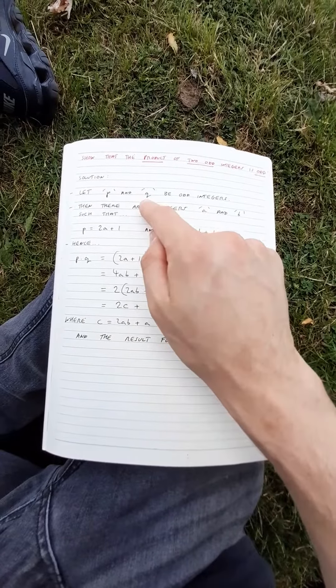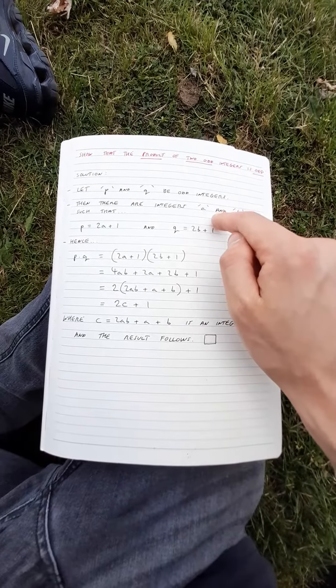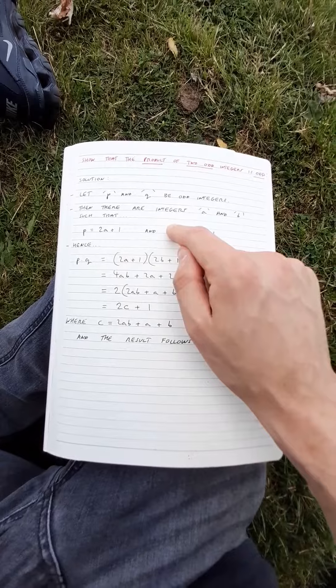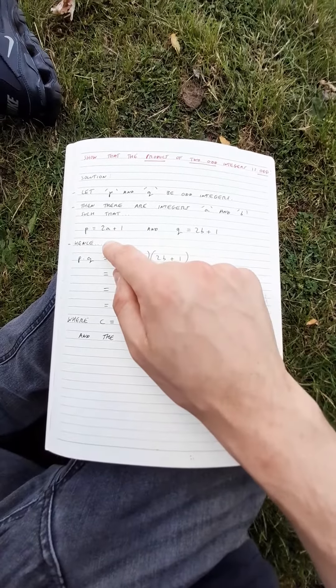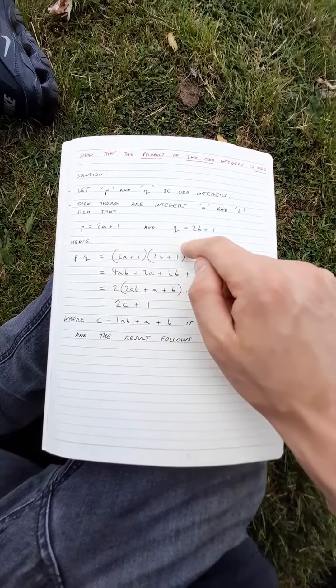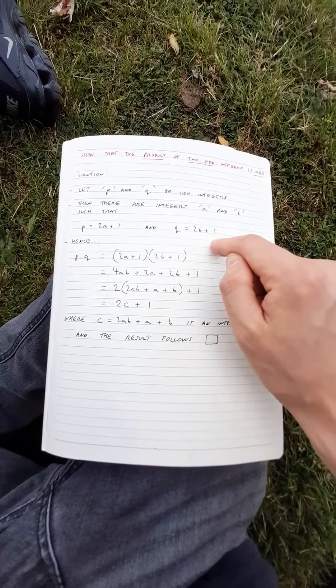Let p and q be odd integers. Then there are integers a and b such that p is 2a plus 1 and q is 2b plus 1.